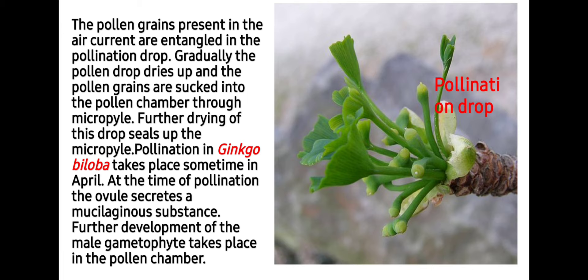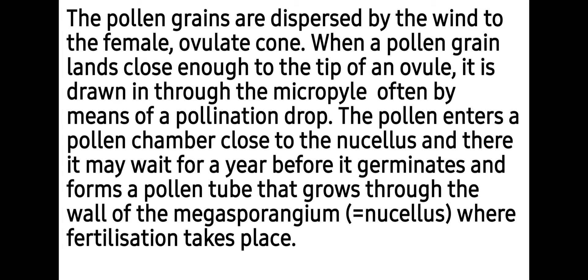Further drying of this drop seals up the micropyle. Pollination in Ginkgo biloba takes place sometime in April. At the time of pollination the ovule secretes a mucilaginous substance. Further development of the male gametophyte takes place in the pollen chamber. The pollen grains are dispersed by wind to the female ovulate cone.